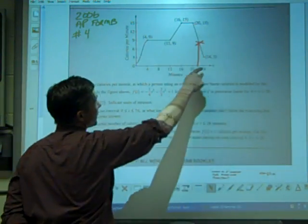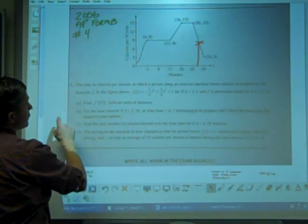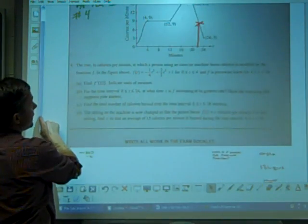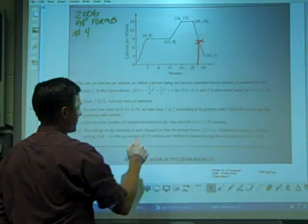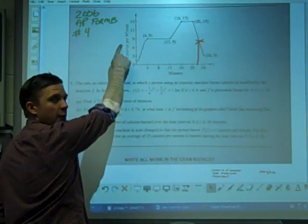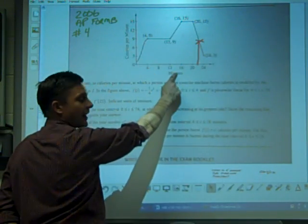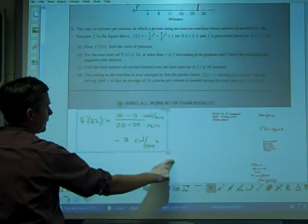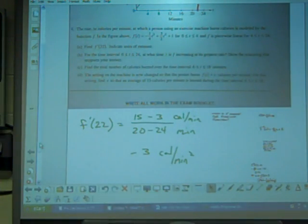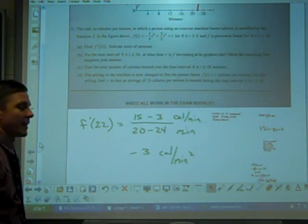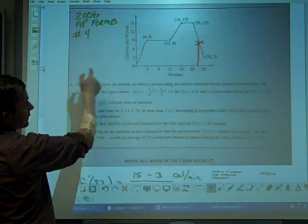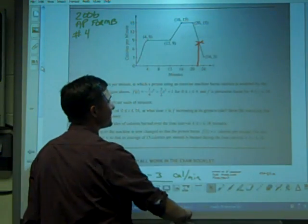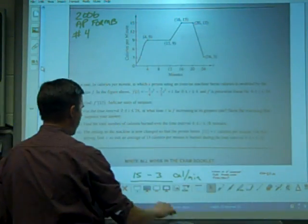It is a linear piecewise function. So all we have to do is take these two points, and the units will be calories per minute (rise) divided by minutes (run), rise over run. If we do that math, you should get that F'(22) is -3 calories per minute squared. Does that make sense? When I look at the graph, yeah, it is sloping downward. So that would be part A.